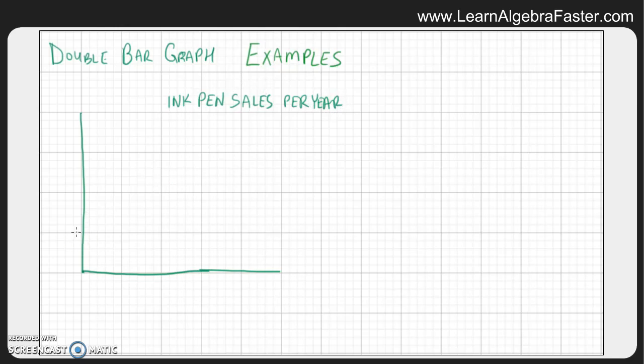If we're measuring the sales, we'll say maybe we sold between 1000 and 4000. That fits on our graph easily. And let's say let's measure black ink pens, blue ink pens, and red ink pens.